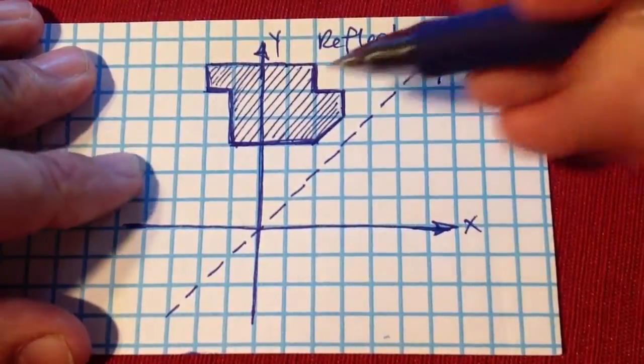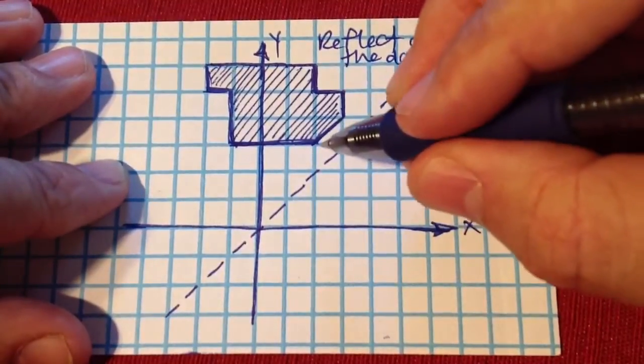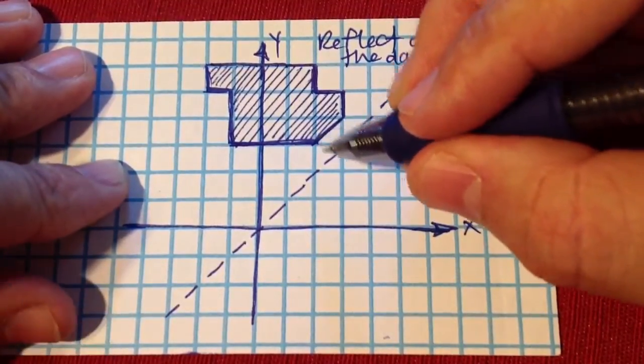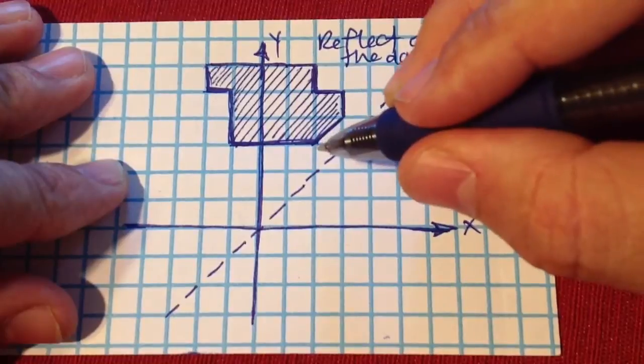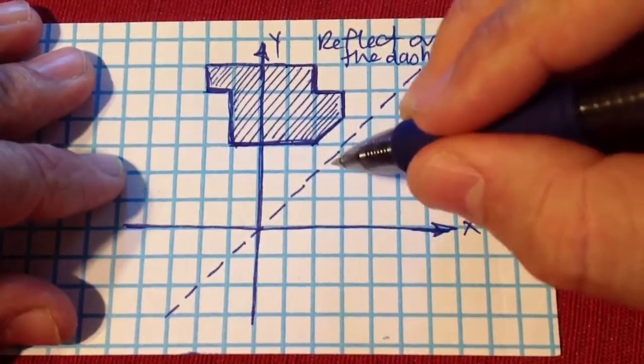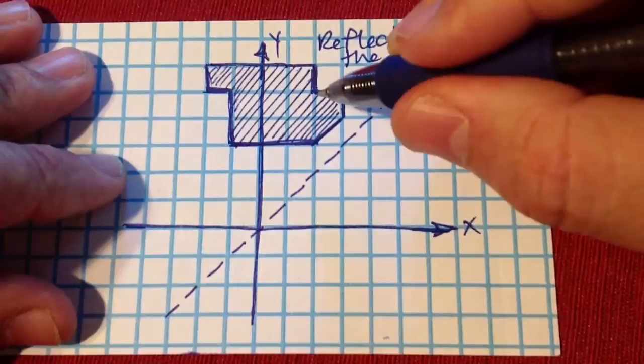Okay, so this is tricky, and what I've seen that works is do, of course, one point at a time, and look at the perpendicular distance from the reflection line to each one of the vertices of the shape.